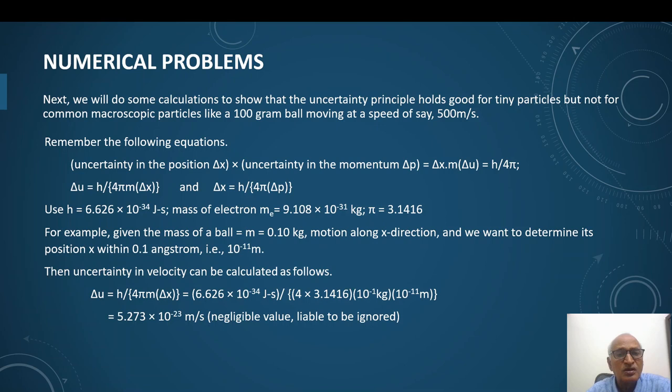Here we have first taken ball of mass 0.1 kg. When we put the relevant data in the equation and determine its uncertainty in velocity, we find uncertainty is 5.273 × 10^-23 meter per second. This value is negligible. It means for microscopic particles, uncertainty principle does not hold good. It can be ignored.